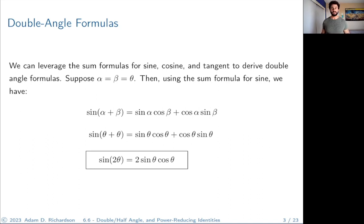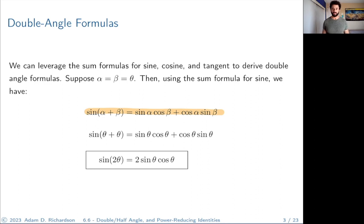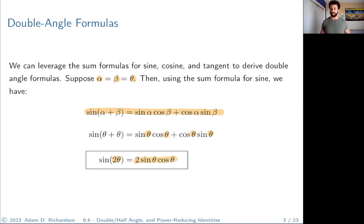The theme for this section is to leverage identities we've already derived — no more geometric arguments. We just massage and tweak them to get new ones. For the double angle identity for sine, we leverage the angle sum formula for sine. We let alpha and beta both equal theta, so sine(α + β) becomes sine(θ + θ). Since θ + θ = 2θ, we get: sine(2θ) = 2 sin(θ)cos(θ).